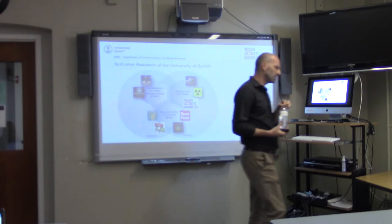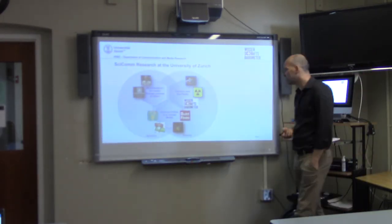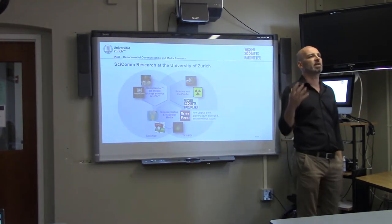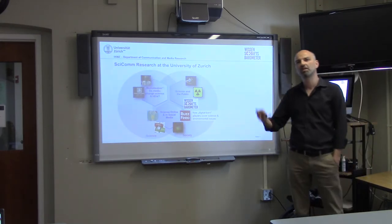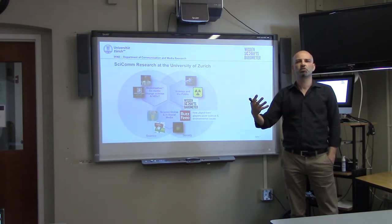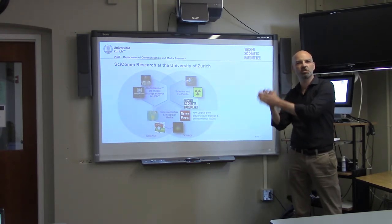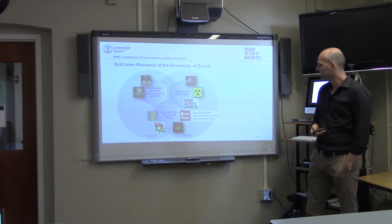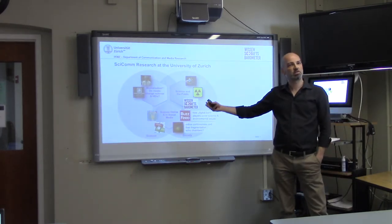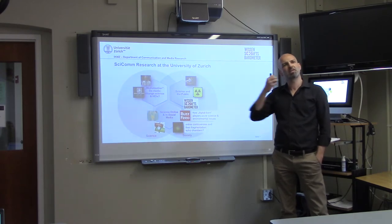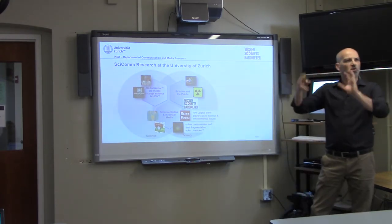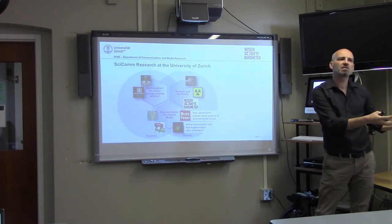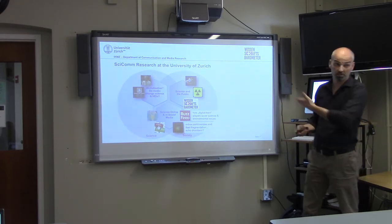Media ecosystems and landscapes have changed — online media have become more important. We've looked at how digital-born journalistic players like BuzzFeed, the Huffington Post, and Vice actually cover science and environmental issues, and how these representations differ from other journalists. We look into online controversies and potential fragmentation — things like echo chambers and filter bubbles. Research now suggests this is not a general phenomenon, but may exist specifically around climate change.